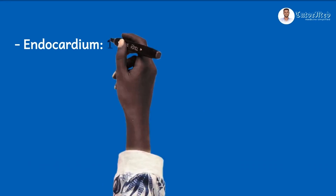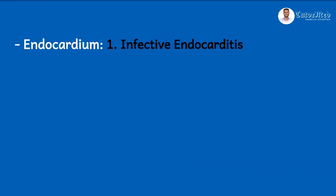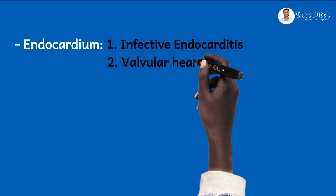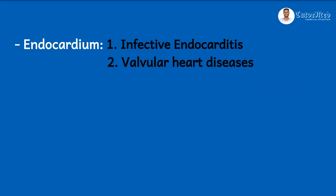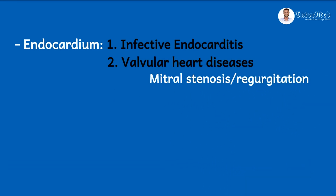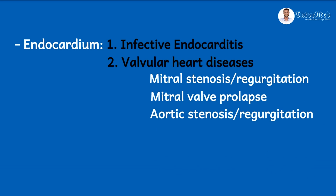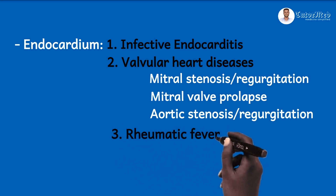From the myocardium, we move to the innermost layer — the endocardium. Here we can learn about infective endocarditis. Remember, the valves project from the endocardium, so we can learn about the various valvular heart diseases here — mitral stenosis, mitral regurgitation, mitral valve prolapse, aortic stenosis, aortic regurgitation, tricuspid stenosis, tricuspid regurgitation, and the like. Although rheumatic fever can cause pancarditis — affecting all layers of the heart — we will place it under the endocardium for organizational purposes.